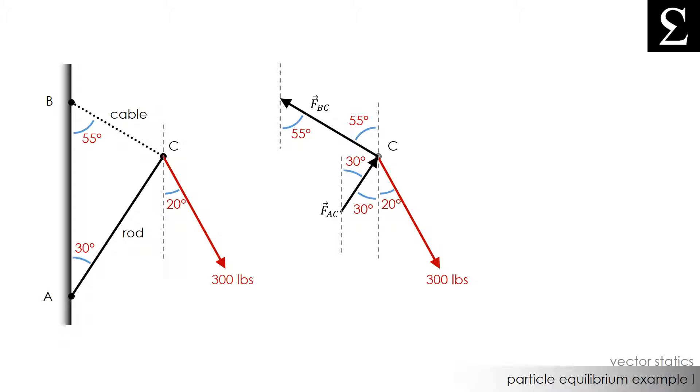Point C as we know is in equilibrium which means that the forces acting on particle C produce no resultant force that causes the particle to move in any direction. We know that the resultant force of this system must be equal to zero for particle C to be in equilibrium.